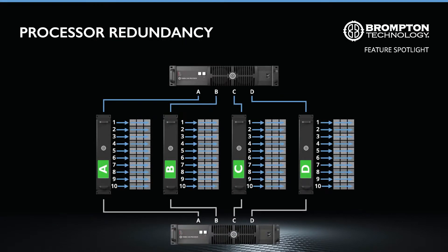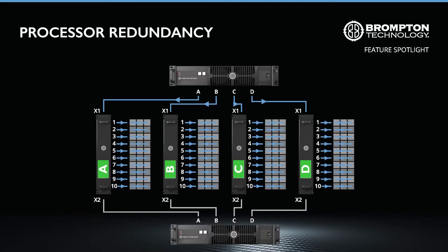Processor redundancy is only available for Tessera SX40 processors, and enables a secondary SX40 processor to be connected as a failover option in case the primary experiences any type of fault. The setup involves connecting each SX40 processor to the same X1 and X2 ports on the Tessera XD distribution units. Once all is connected, either processor can be set to be the primary from within the Tessera software interface.